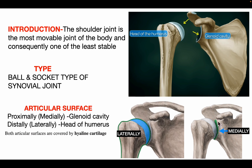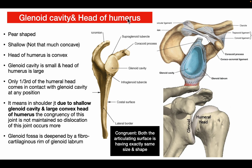As seen in the diagram, the glenoid cavity is medially situated and the head of the humerus is lateral. Both articulating surfaces are covered with hyaline cartilage. The glenoid cavity is pear-shaped and shallow, while the head of the humerus is convex. The glenoid cavity is small and the humeral head is large, so only one third of the humeral head comes in contact with the glenoid cavity at any position.